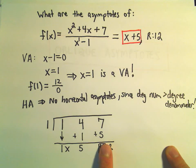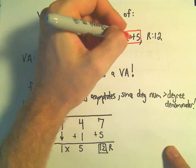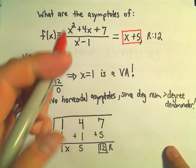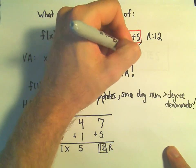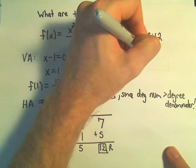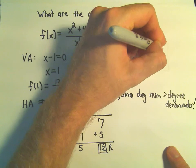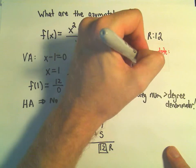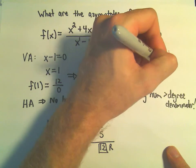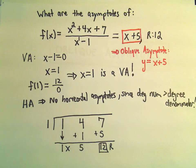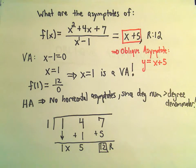So remember, our oblique asymptote is just a line, so it says, in this case, our oblique asymptote would be the line y equals x plus five. So there is one vertical asymptote at x equals positive one.